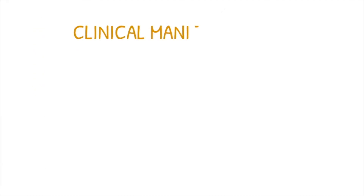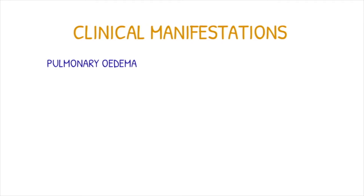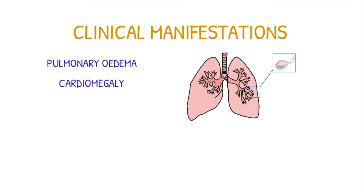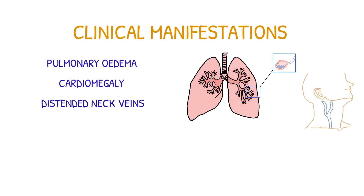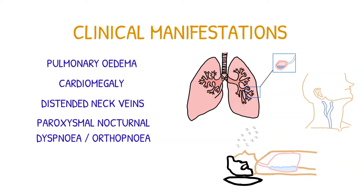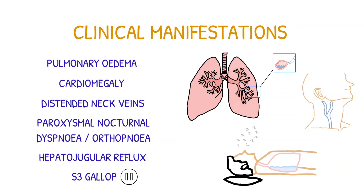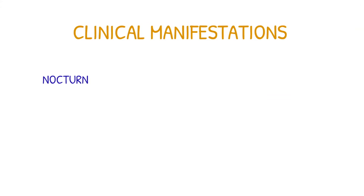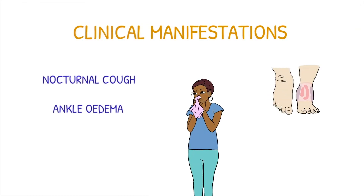Clinical manifestations of heart failure can be summarised in the Framingham criteria. Some of the major criteria are acute pulmonary edema, cardiomegaly, neck vein distension, and paroxysmal nocturnal dyspnea or orthopnea. These occur when a patient is lying flat and fluid builds up in their lungs, causing them to abruptly awaken during the middle of the night feeling extremely short of breath. Also included are hepatojugular reflux and an S3 gallop heart sound. Minor criteria include a nocturnal cough, peripheral edema in the ankles, and tachycardia.